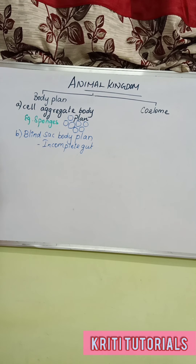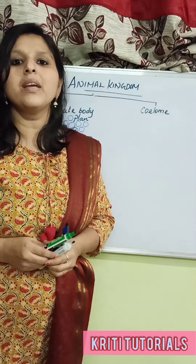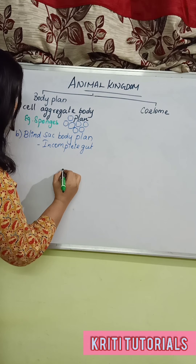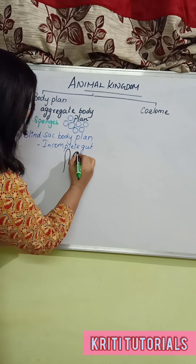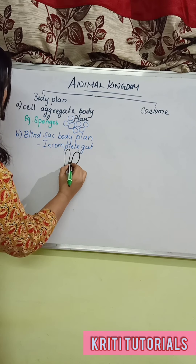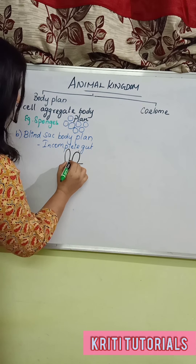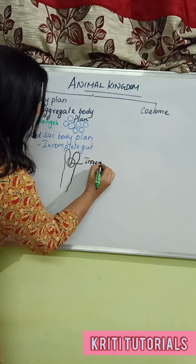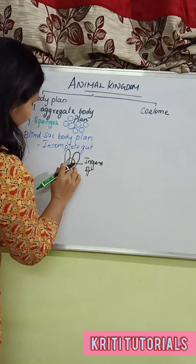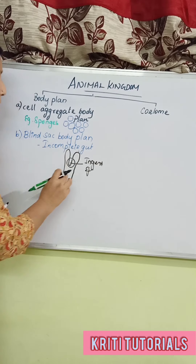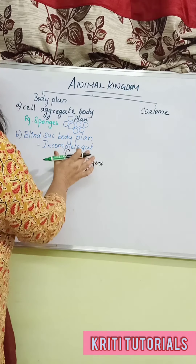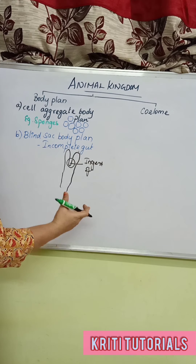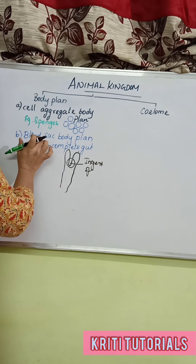In the case of hydra, you can see one cavity. This cavity acts as the site for both ingestion and ejection of food substances. So one cavity acts as the site of ingestion as well as ejection. Species which have this incomplete gut are called the blind sac body plan.